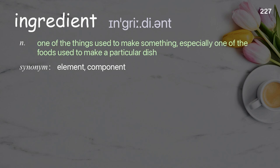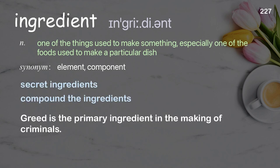Ingredient: one of the things used to make something, especially one of the foods used to make a particular dish. Examples: secret ingredients; compound the ingredients. Greed is the primary ingredient in the making of criminals.